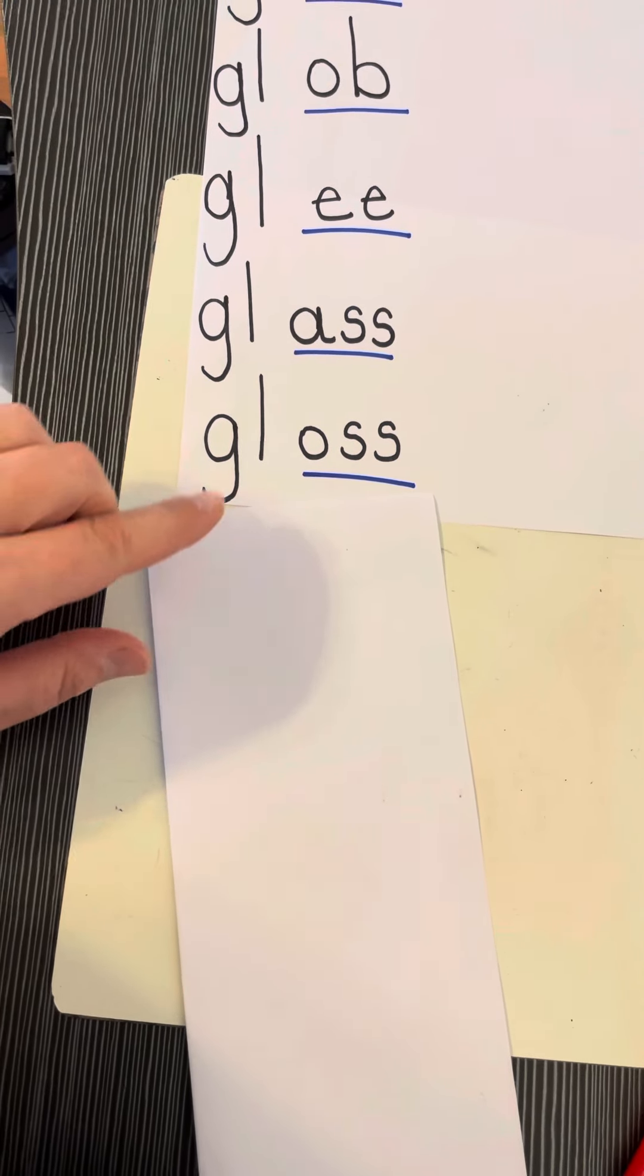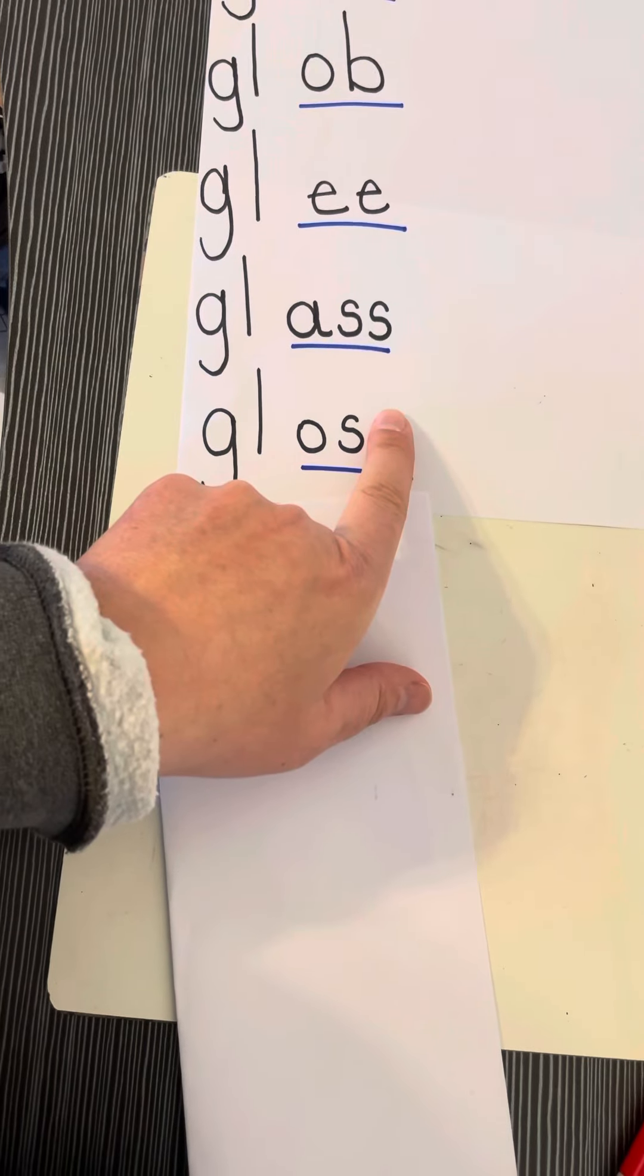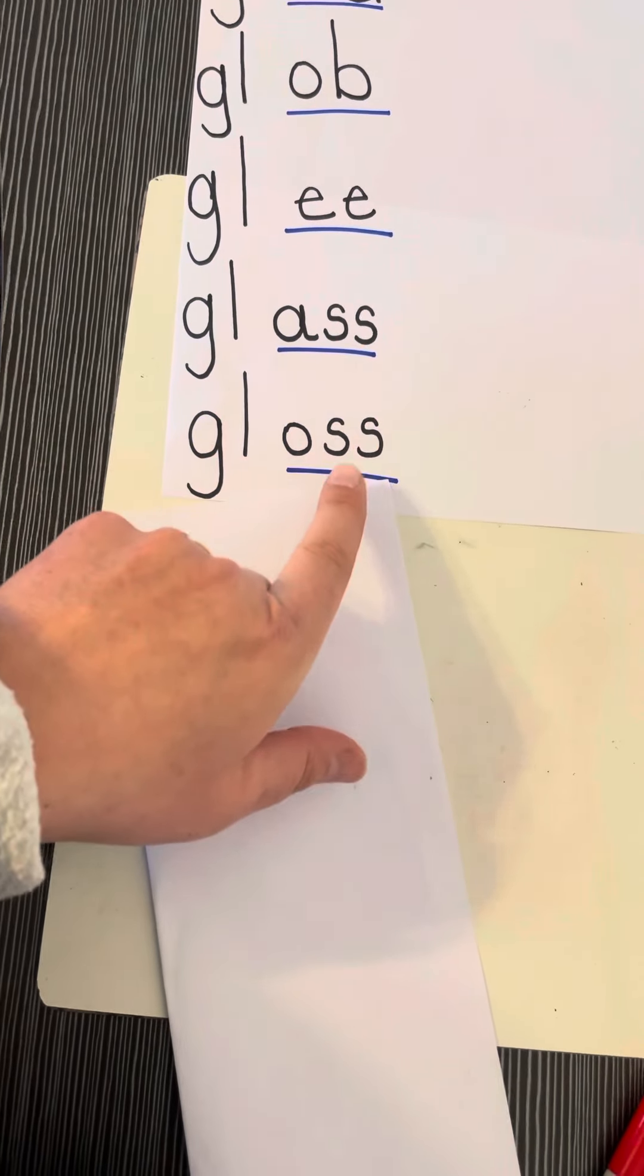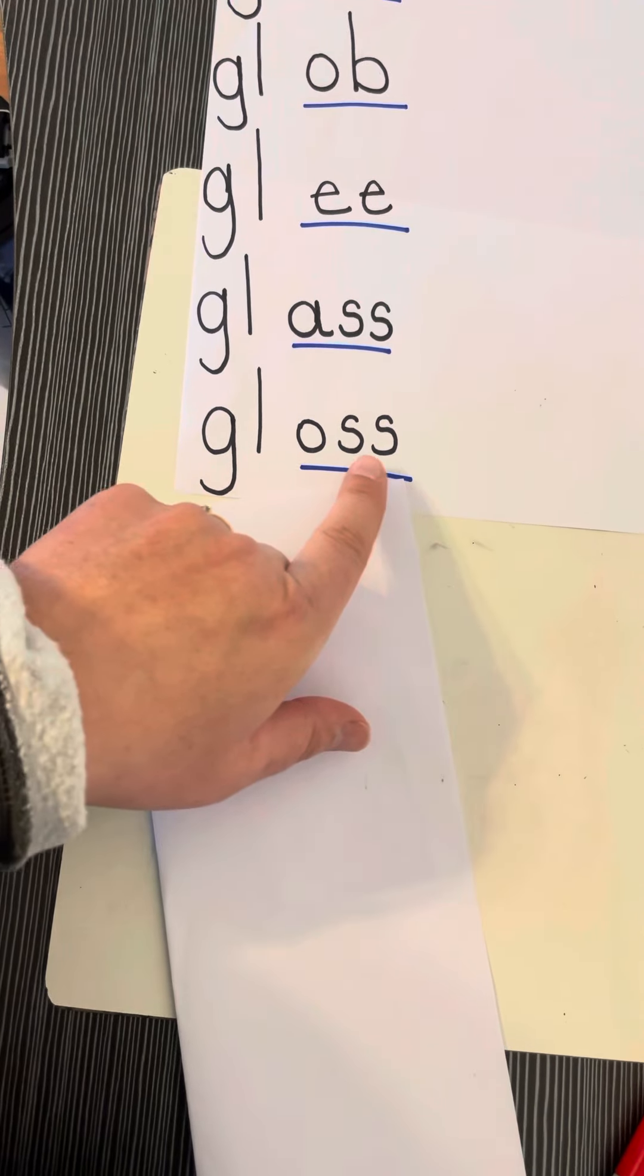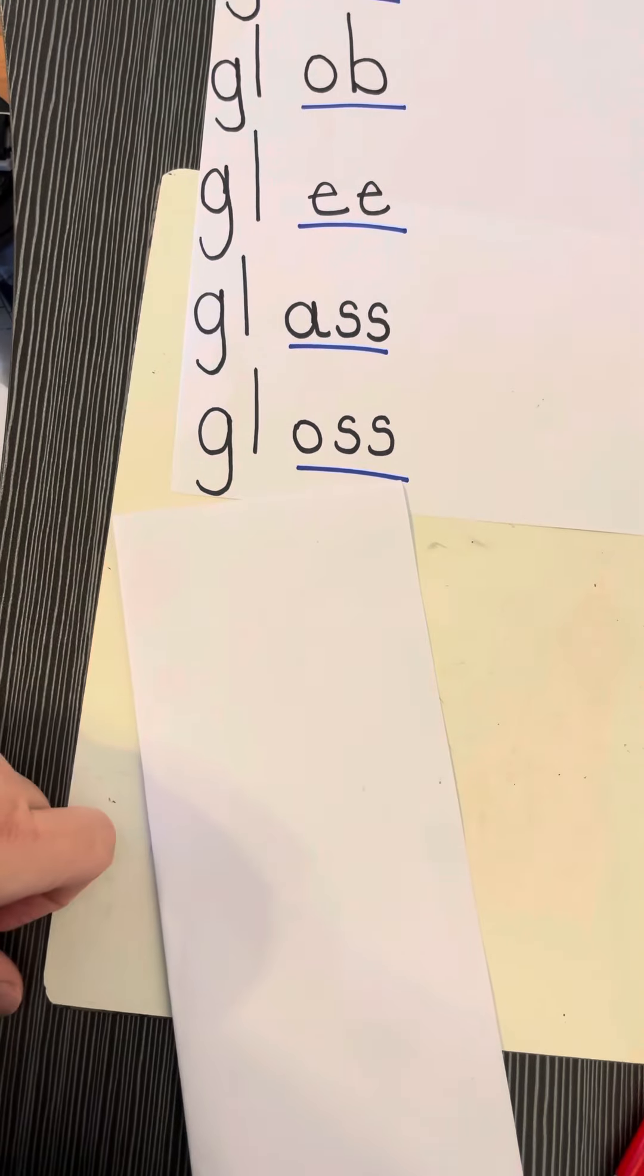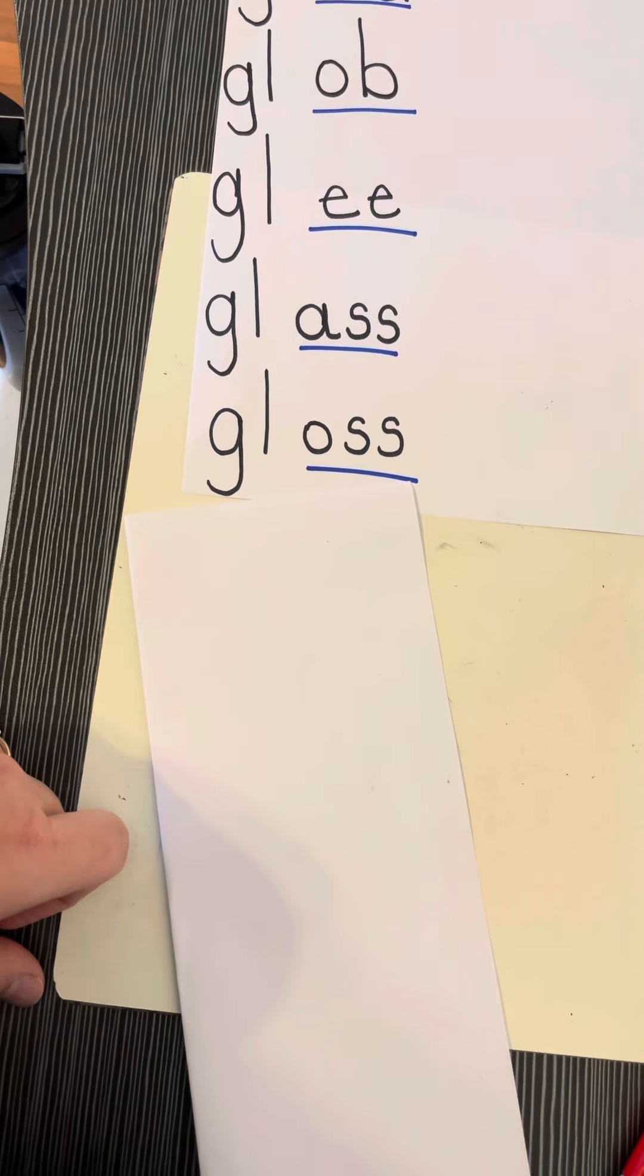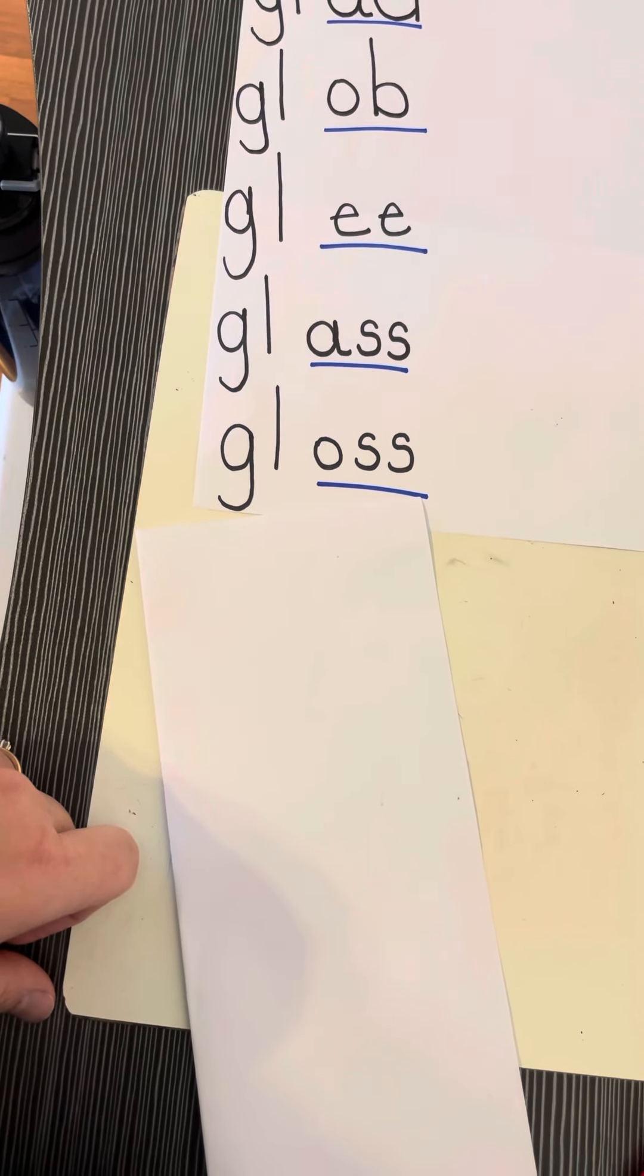The next one, we have GL says 'ghoul', O says 'ah', and you only hear one S, just like in glass. So it makes 'ss'. Ghoul-ah-ss, ghoul-ass, gloss, gloss. Very shiny, gloss. It's almost like you can see a reflection in it, it's so shiny. Gloss.